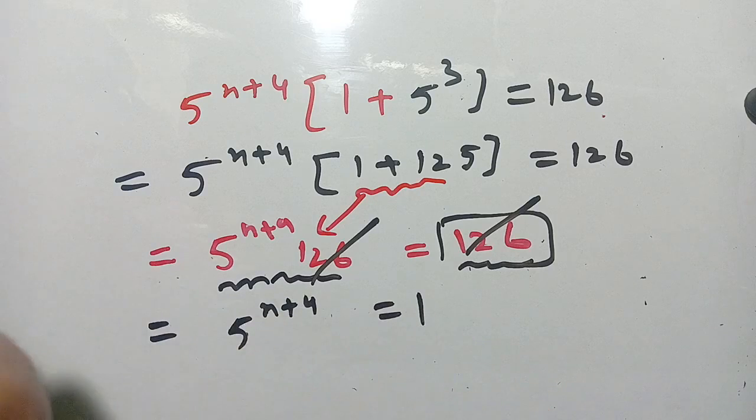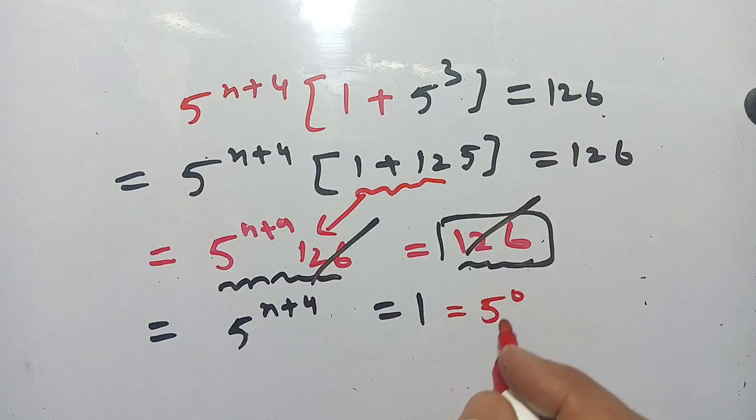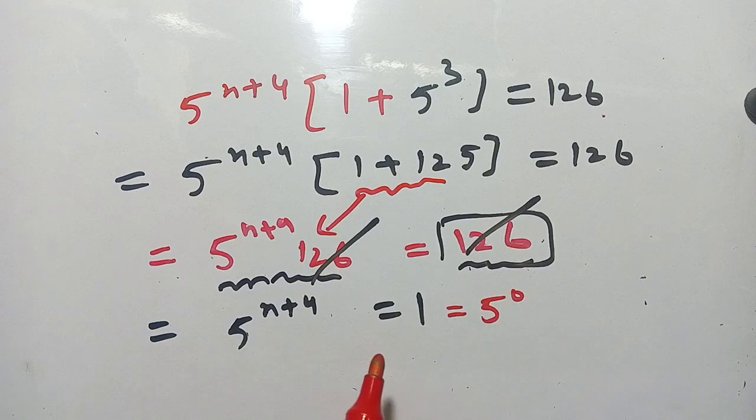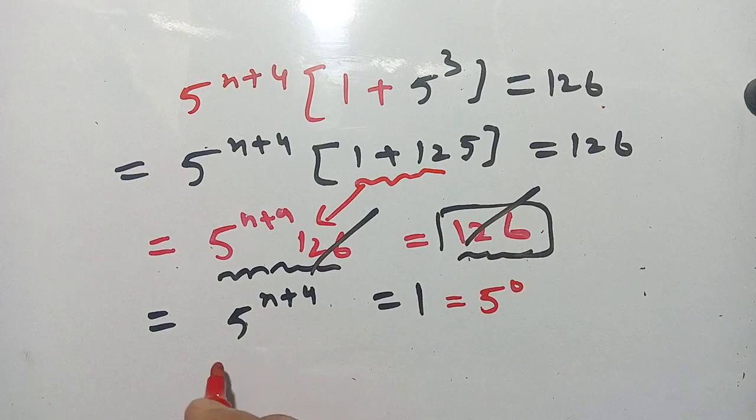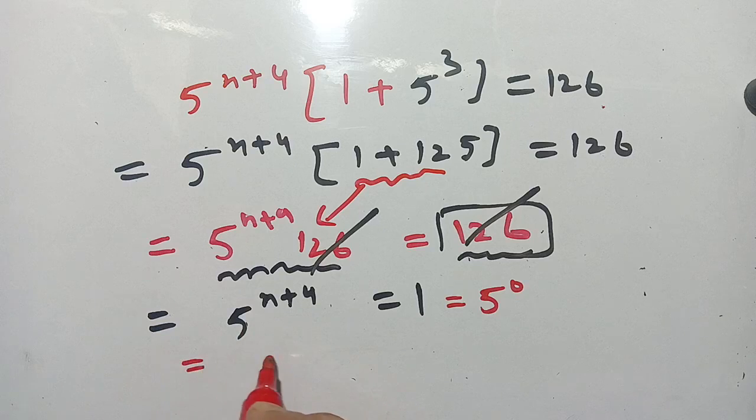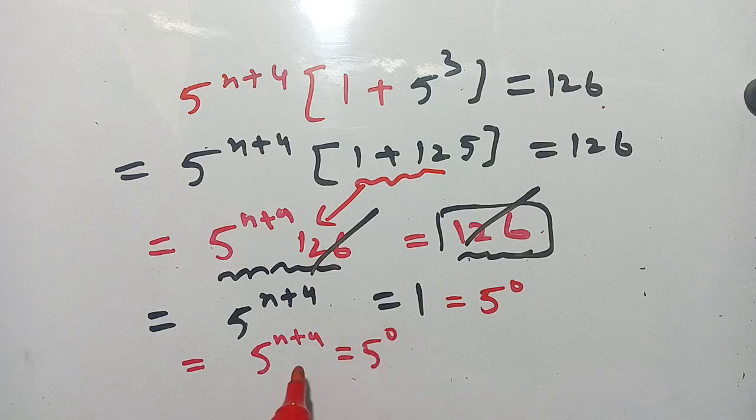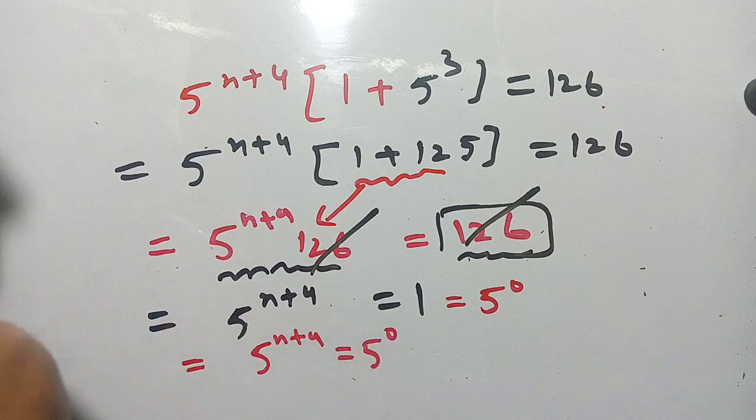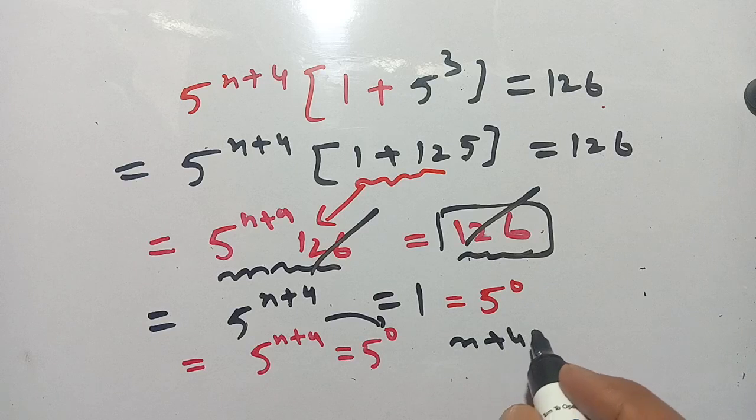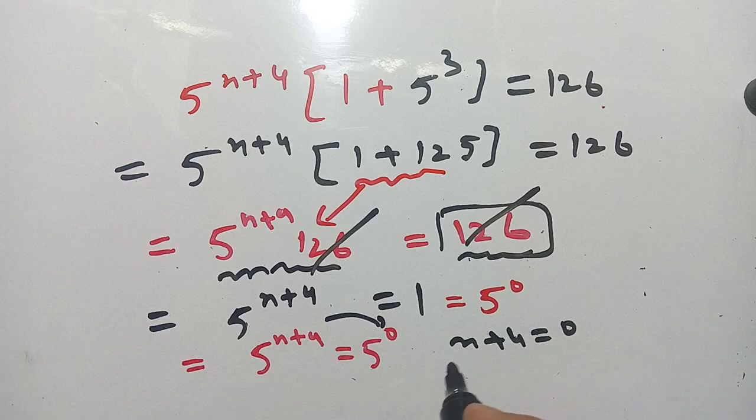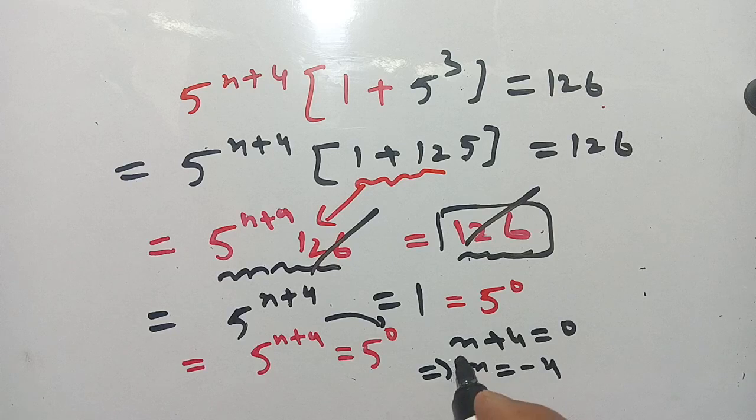Now here 1 can be written as 5 power 0, because any number to the power 0 is equal to 1. Now we get 5 power n+4 is equal to 5 power 0, and on comparing the powers we get n+4 is equal to 0.